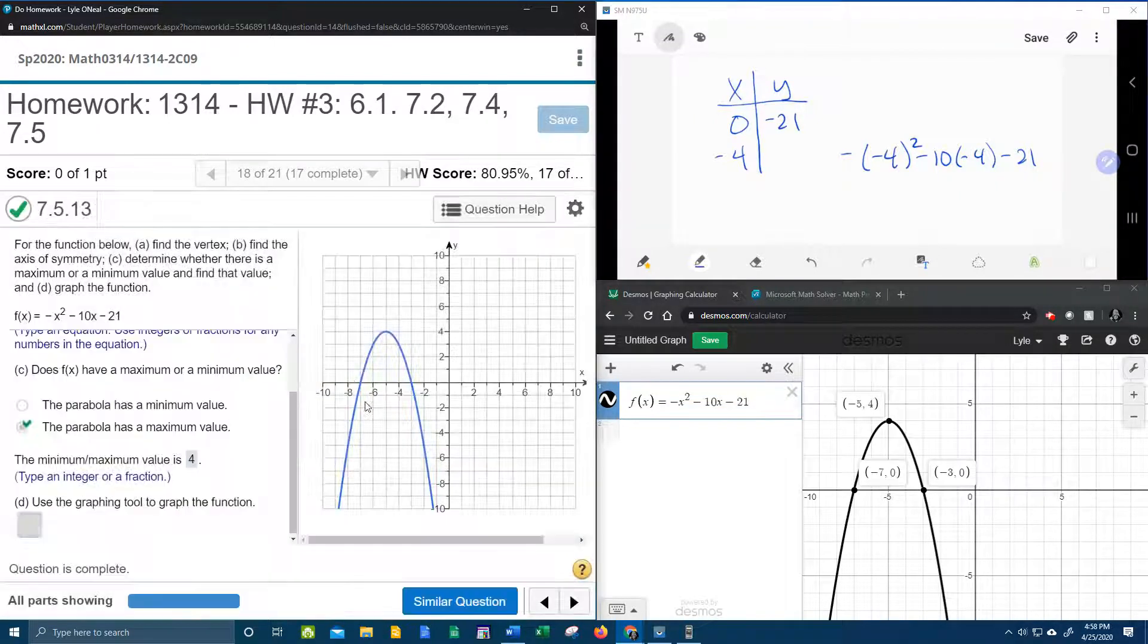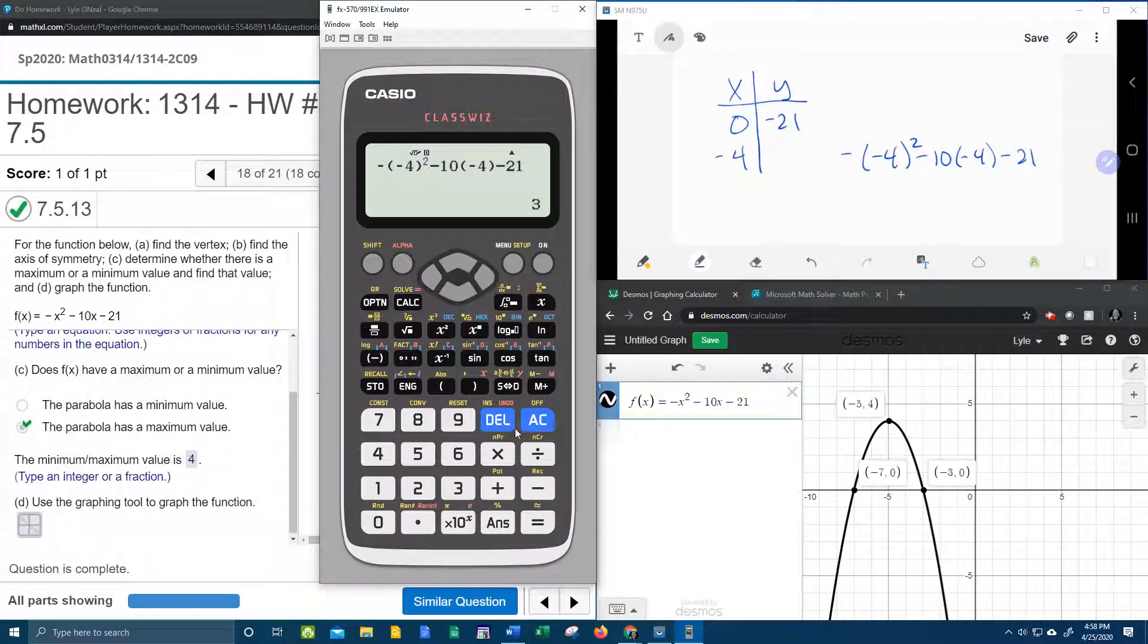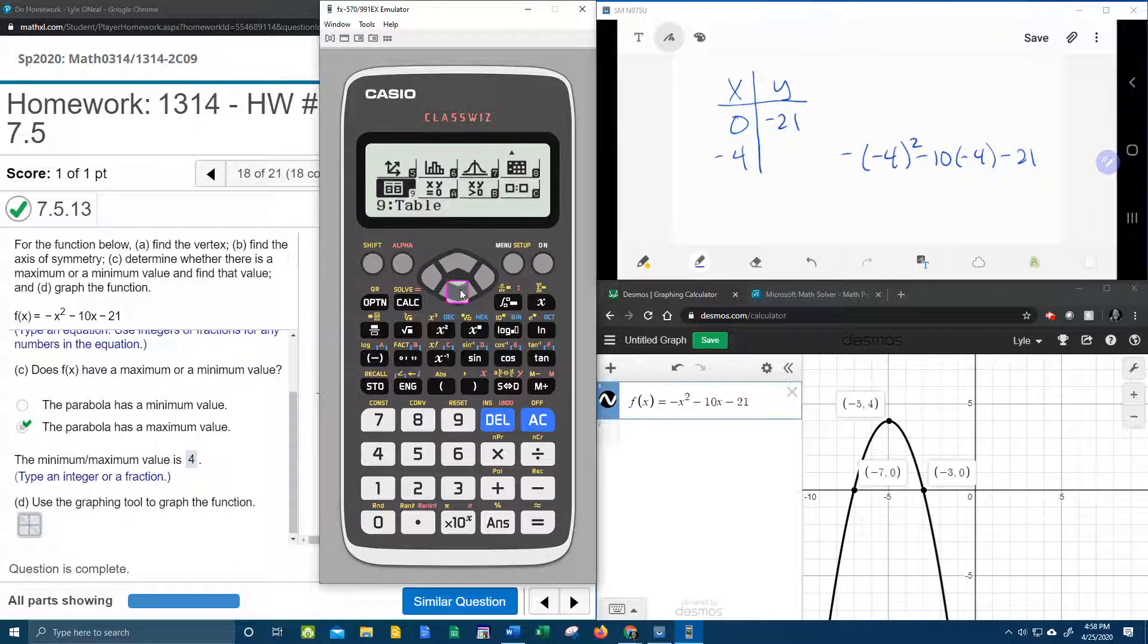You know what I think I'm going to do, just for a bonus, is I'm going to go back to the ClassWiz. And I'm going to show you how to get the vertex from the ClassWiz as well. So let's go to the menu. We're going to go down to where it says Equation, Polynomial. And remember, if it's quadratic, it's a degree of 2. And let's enter our coefficients. Negative 1, negative 10, negative 21, equals, and equals again.